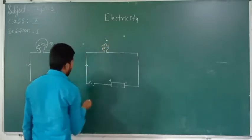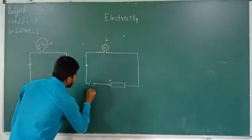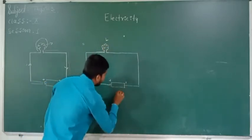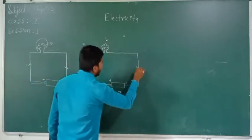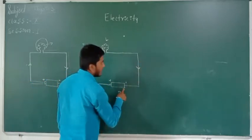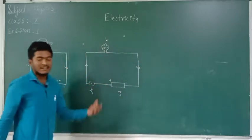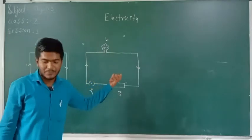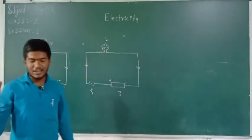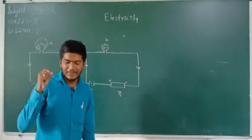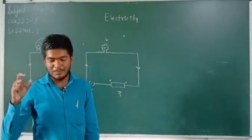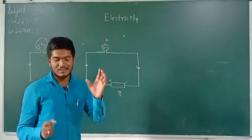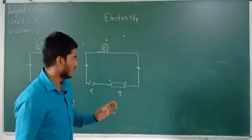Here is a lamp, this is the key, this is the battery — this is the positive end, that is the negative end. This is the simple circuit diagram. A continuous and closed path of an electric current is called as electric circuit.